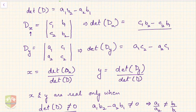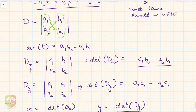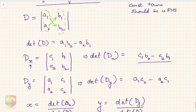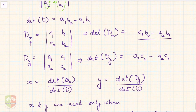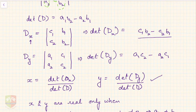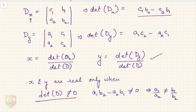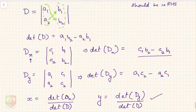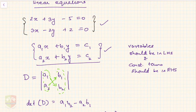So, to summarize what we learned: we define three determinants — D (the coefficient determinant), Dx, and Dy. Then x equals Dx divided by D, and y equals Dy divided by D. You can directly find the solution using these determinant values.